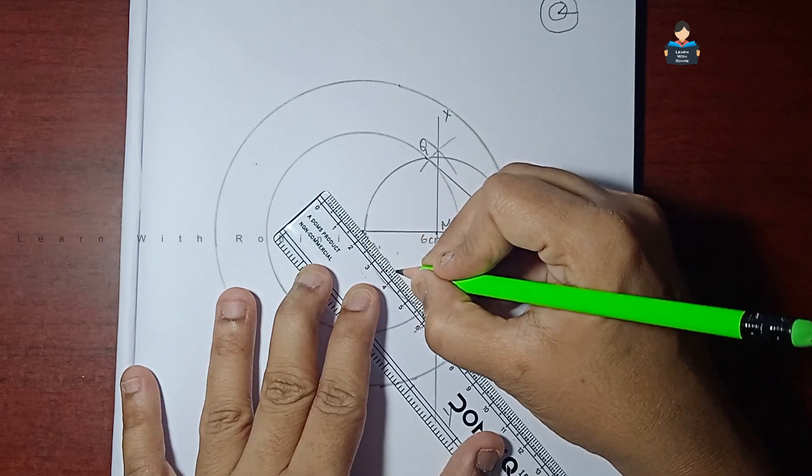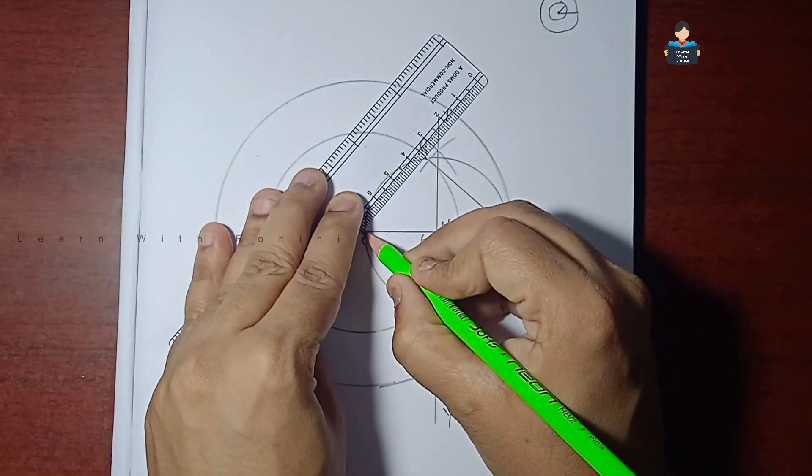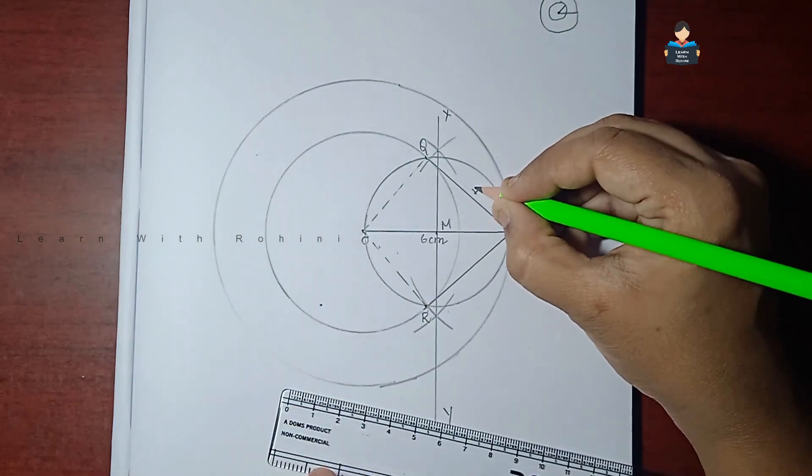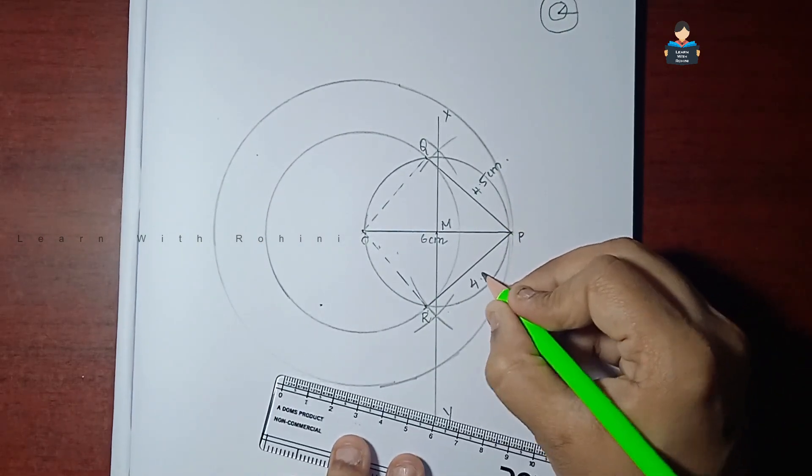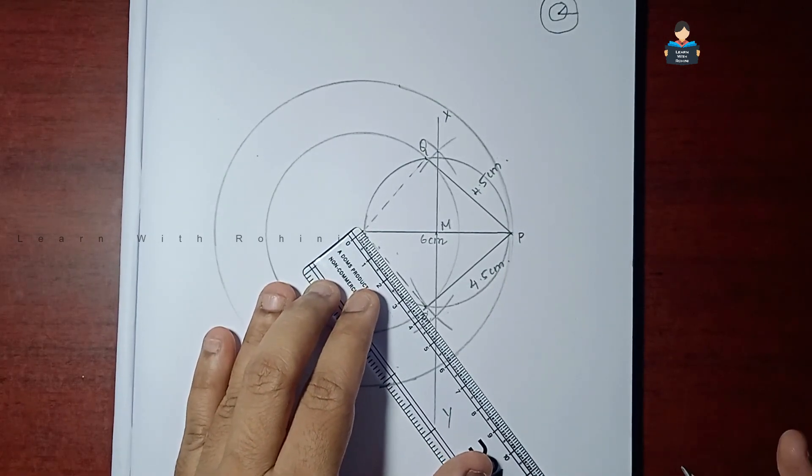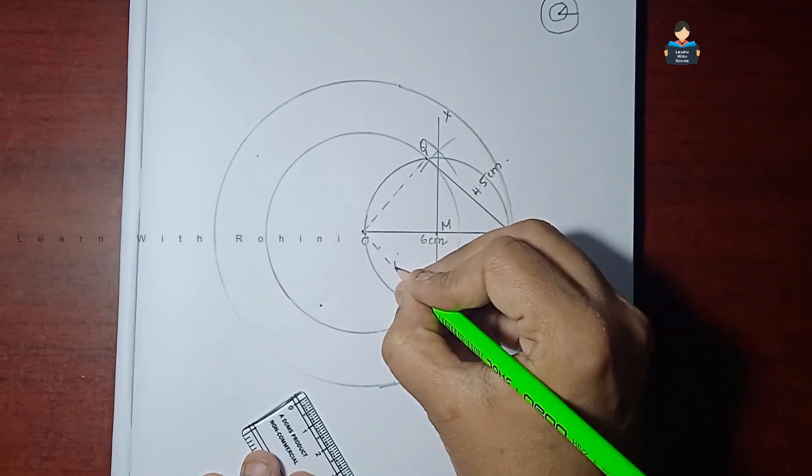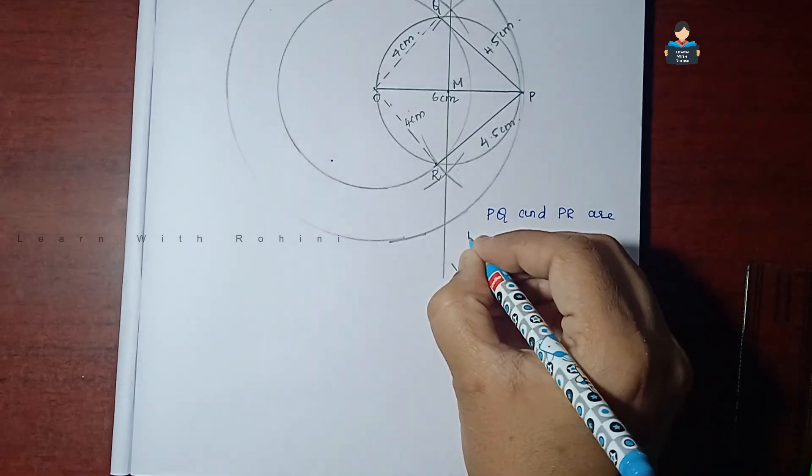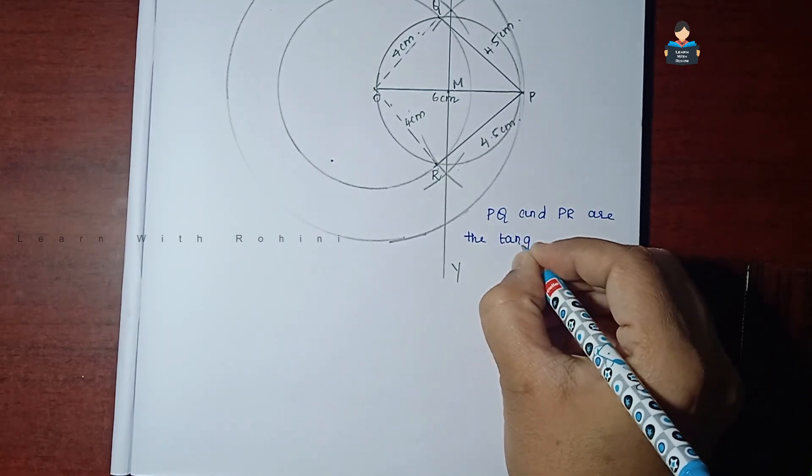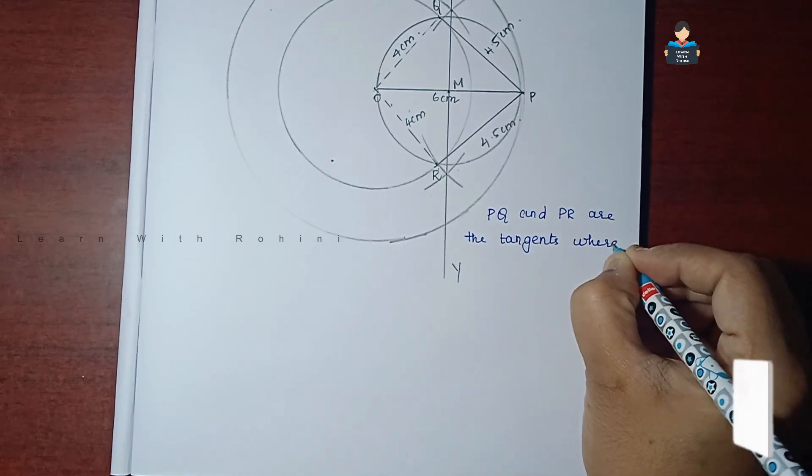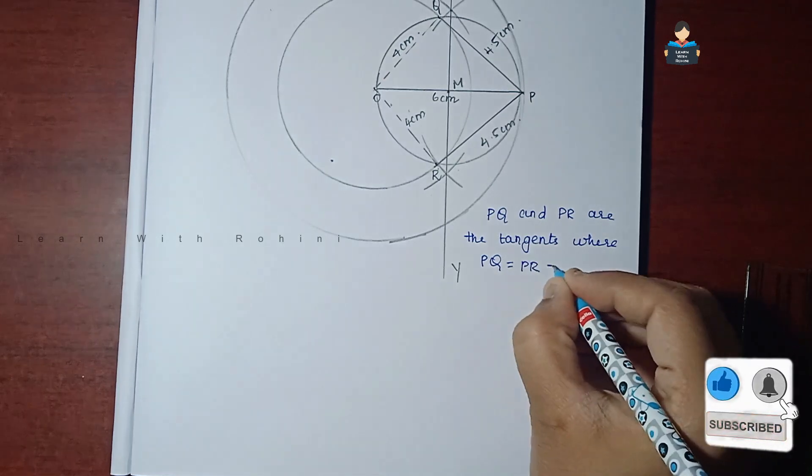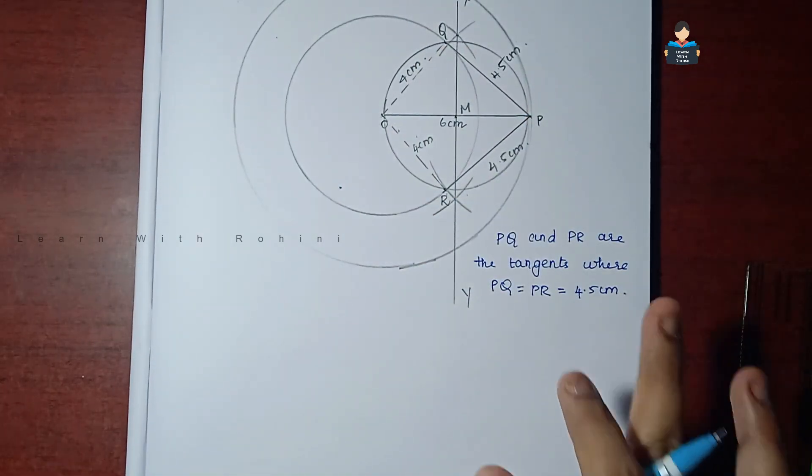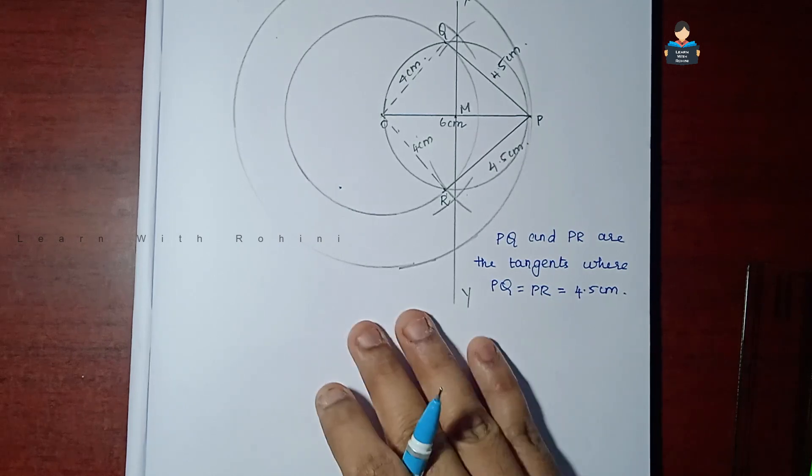So here is the length. So the length is 4.5, approximately 4.5 cm. And the radius of the smaller circle is 4 cm. PQ and PR are the tangents where PQ equal to PR equal to 4.5 cm. So we measure approximately 4.5 cm. So now we are going to verify the measurement by actual calculation. So first, justification.